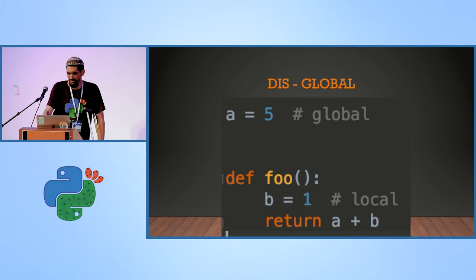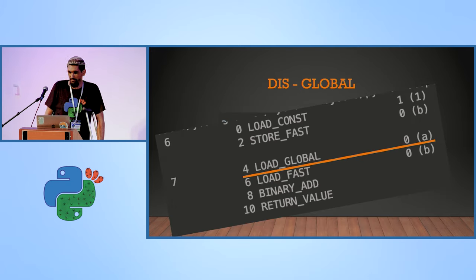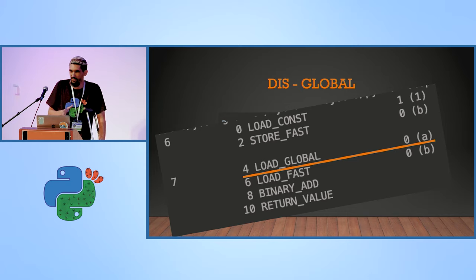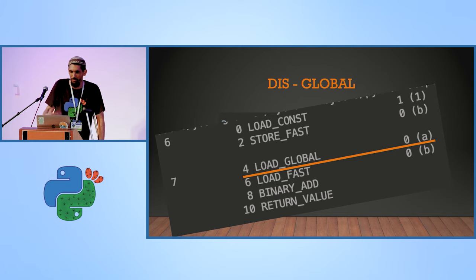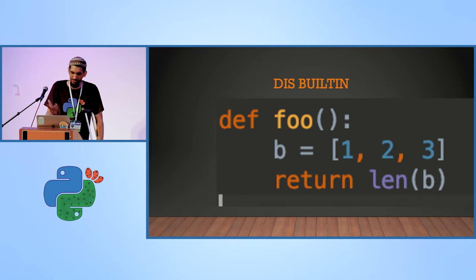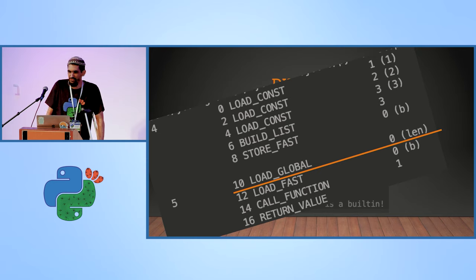For global scope bytecode: function foo takes A from the global scope, and the instruction is load_global — not so futuristic. As you can see, already in the compilation phase of Python, the scope resolution order is defined. It's not like the interpreter looks — oh, I will look in global scope, then local, then enclosed, then global — no. Already at compilation time it knows what to look for. This is a bit faster than iterating. And then we get to the built-in: we have the len method from built-in — it's not in the global scope — and we see the same instruction again: load_global.